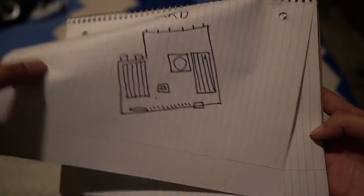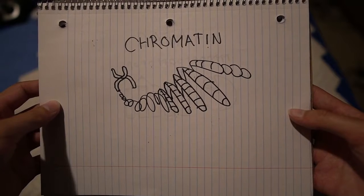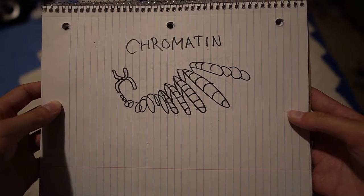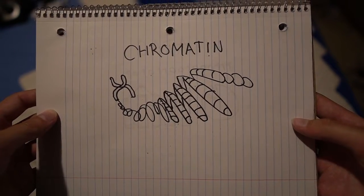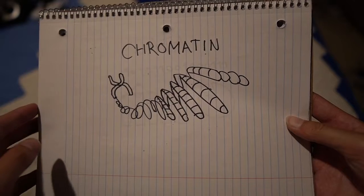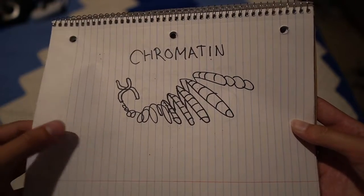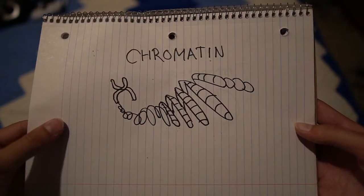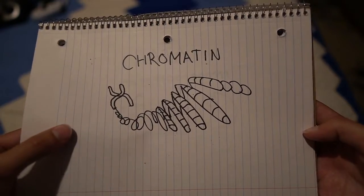We then move on to the chromatin. The chromatin is a mixture of DNA and proteins that are the base of chromosomes. Those chromosomes are found in the nucleus. As described previously, chromosomes are essentially the code of which humans run on.